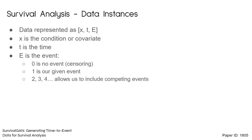Data instances in survival analysis appear as x, t, and e. x is the initial condition or the covariate, t is the time, and e is the event, which is given by integers: 0 being no event (i.e. censoring), and 1 the event of interest. We can extend the integers to include competing events, depending on the scenario.